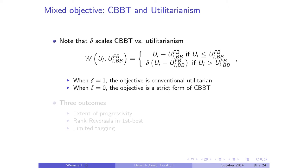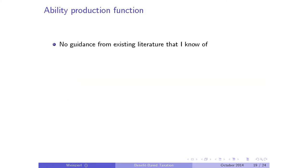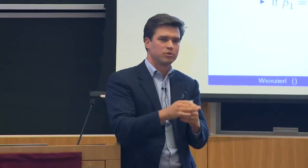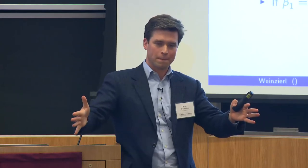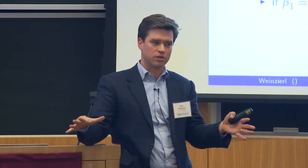I want to show results for optimal policy along three dimensions: extended progressivity, rank reversals in the first best, and tagging. These get at puzzles in existing policy we can't explain well with plain utilitarianism. There's also an elephant in the room I haven't talked about: the production function for ability. What is this ability production function W = F(A, G)? I can't find much in the literature on how public goods actually magnify innate talents for individuals, so this is my shortcut: like the equality of opportunity literature, people have fixed positions in the income distribution, and public goods shift the parameters of that ability distribution.